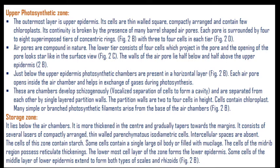Just below the upper epidermis, photosynthetic chambers are present in a horizontal layer. Each air pore opens inside an air chamber and helps in gas exchange during photosynthesis and transpiration. These chambers develop by lysogenous cavitation, separating cells to form a cavity, and are separated from each other by single-layered partition walls two to four cells in height. The cells contain chloroplasts. Many simple or branched photosynthetic filaments arise from the base of the air chambers and participate in photosynthesis.